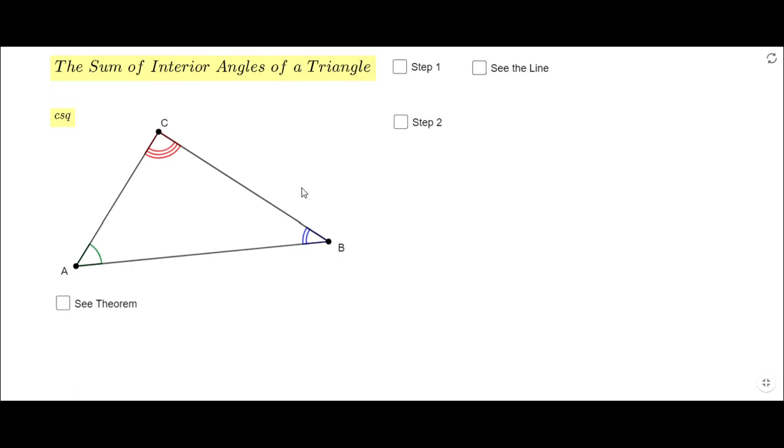So let's first click on step one, which says draw a line parallel of segment AB to C. So I'm gonna draw a line parallel of segment AB to this point C.